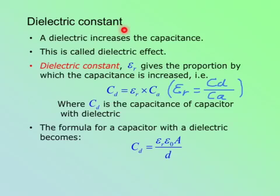Dielectric constant. A dielectric increases the capacitance of a capacitor. This is called dielectric effect. And dielectric constant, εR, gives the proportion by which the capacitance of a capacitor is increased.